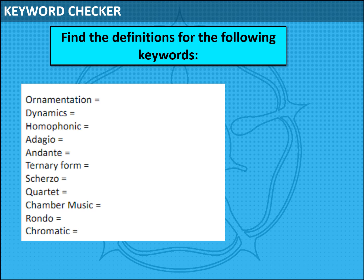Homophonic, remember, is a texture key word — it means accompanying parts with the same rhythm as the melody, sometimes also classed as melody and accompaniment, but they are ever so slightly different. Adagio is a tempo key word and that means slow. Andante is another tempo key word but that one means at a walking pace. Ternary form is to do with your structure — remember that is ABA, a piece in three sections. A scherzo is a vigorous, light or playful composition. A quartet is a piece of music made up with four instruments.